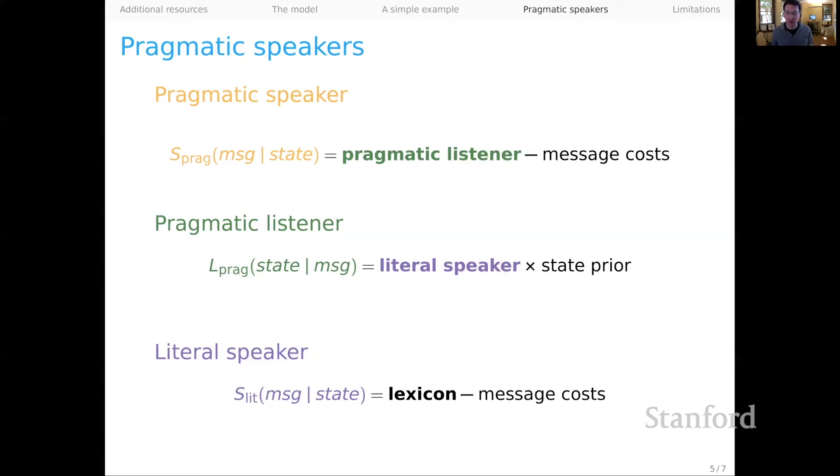And once again, here's a kind of shorthand way of thinking about the speaker perspective. So the literal speaker reasons about the lexicon, subtracting out costs. The pragmatic listener reasons about that literal speaker and the state prior. And then finally, the pragmatic speaker reasons about the pragmatic listener, taking message costs into account. And again, you see that recursion down into the lexicon.